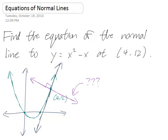Well, in order to find the equation of a line, we need a point and a slope. And we already have a point. It's given to us. (4, 12) is that point. So all we need to do is to find a slope.